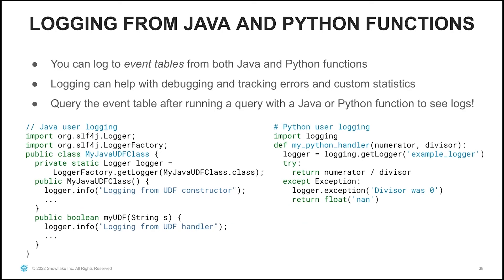Now a bit on logging. When you write Java and Python functions, you can log to event tables — very powerful functionality that can help with debugging and tracking errors and custom statistics. After you've run a query using a Java or Python function that performs logging, you can query the event table to see the logs. For Java logging, you can use the slf4j logger and instantiate it as a static variable in your class, then call logger.info or logger.debug at whatever level you want to log information during execution. From Python UDFs, similarly, you can import the logging module and log whenever something interesting happens — for example, logging that the divisor was zero for some input. You can then query the event table after running a query that hits this exception to figure out what went wrong.